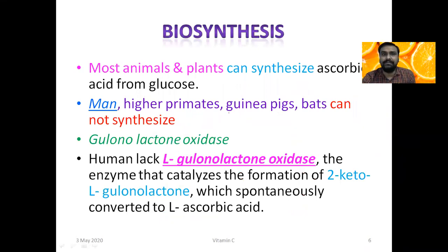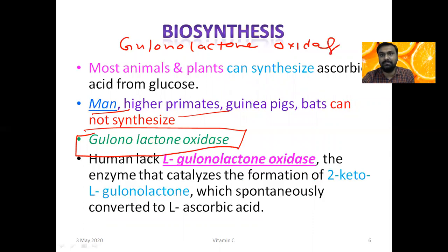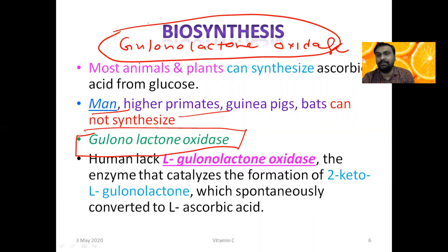Most animals and plants can synthesize ascorbic acid from glucose. However, humans and higher primates cannot synthesize it because of the lack of the enzyme gulonolactone oxidase. Remember this enzyme name — it is frequently asked in many competitive exams. Gulonolactone oxidase is absent in humans and higher primates, so we cannot synthesize Vitamin C in our body.